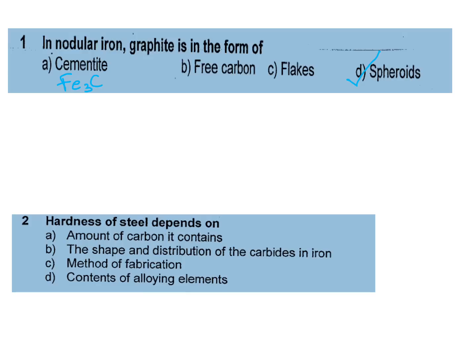Nodular iron is also called ductile cast iron, or simply nodular cast iron, also SG or spheroidal graphite iron. Its shape is spheroid shafts.